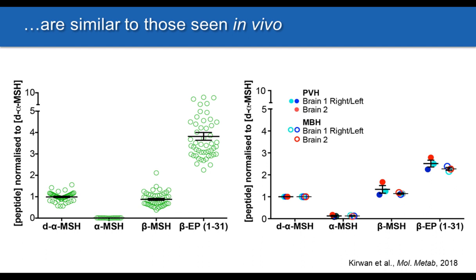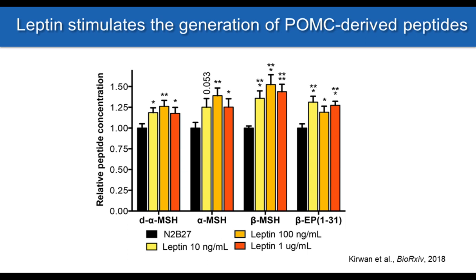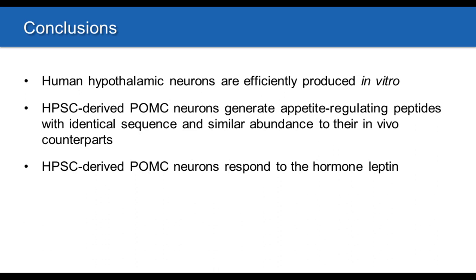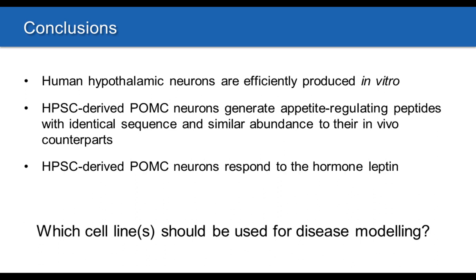Since we have access to live human hypothalamic neurons — which we cannot obtain from postmortem material — we can ask whether the production of these neuropeptides is altered in response to hormones such as leptin. We incubated our cultures with leptin and found a robust induction of both alpha-MSH, beta-MSH, and beta-endorphin in response to leptin. This establishes the culture system as a powerful tool to study human metabolic sensing. To summarize: human hypothalamic neurons are efficiently produced in vitro, POMC neurons generate appetite-regulating peptides with similar abundance to primary human brain tissue, and these cells actively respond to the hormone leptin.